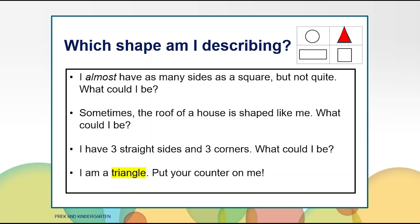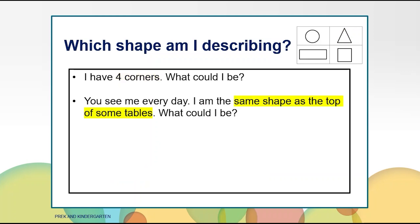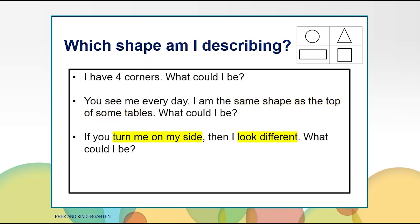Let's try to guess another shape. Here is the first clue: I have four corners. What could I be? Put your counter on the shape you think I am talking about. Here is the next clue. I have four corners. You see me every day. I am the same shape as the top of some counters. Here is the next clue. If you turn me on my side, then I look different. What could I be?